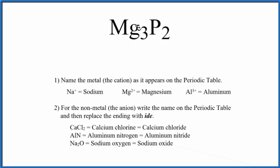And specifically, it's a binary ionic compound. That's because we have only two different elements, the magnesium and the phosphorus, bonded together here. So a binary ionic compound, we'll use these rules here.